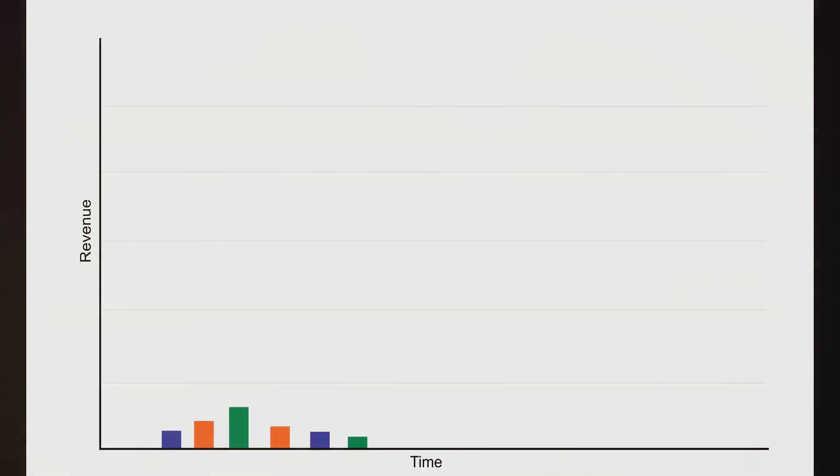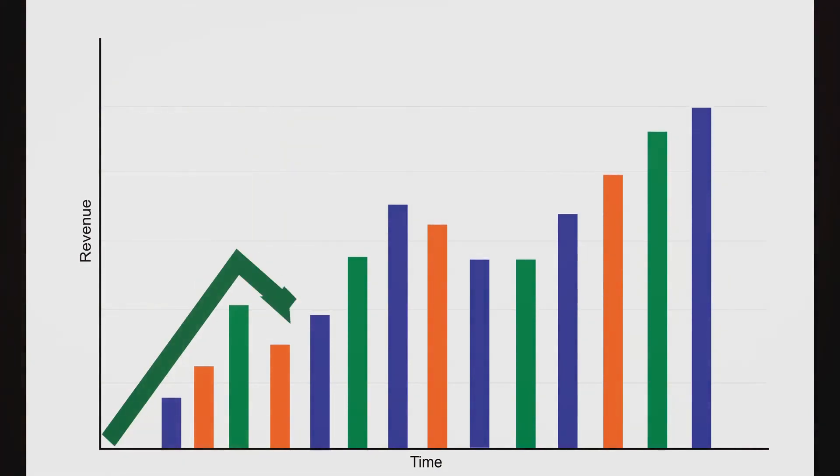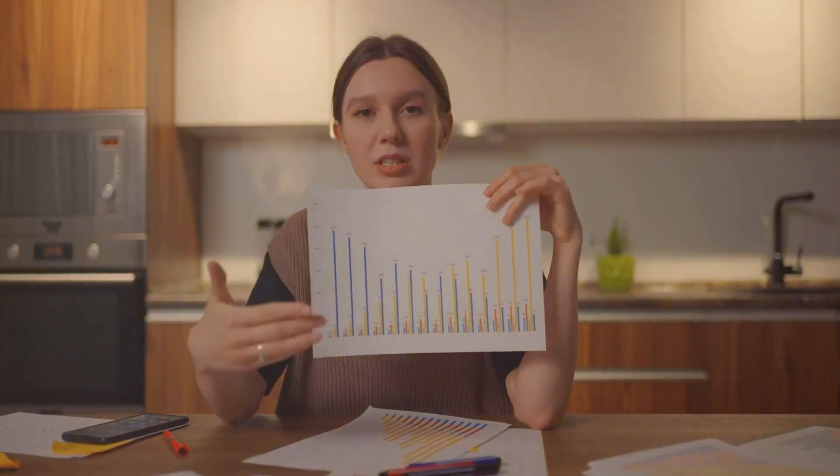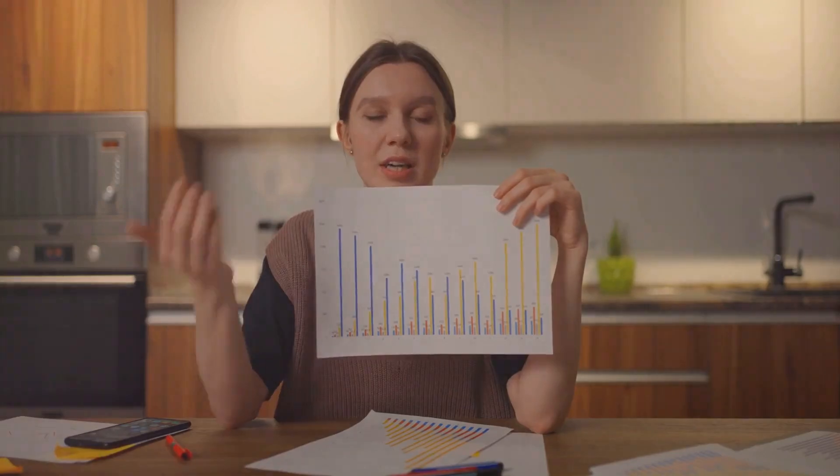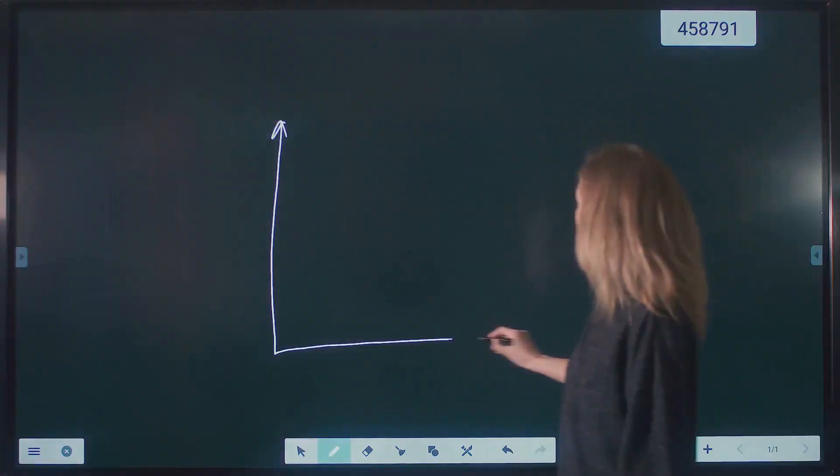Once the local models are fit, the final estimate is obtained by combining the estimates from all the local models. This is done by taking a weighted average of the local estimates, with the weights determined by the distances of the points from the point being estimated.